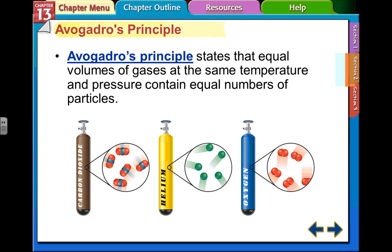Avogadro's Principle states that equal volumes of gases at the same temperature and pressure contain equal numbers of particles. That means it doesn't matter what kind of gas we have - carbon dioxide, helium, or oxygen - if they are at the same temperature and pressure, they're going to contain equal number of particles.